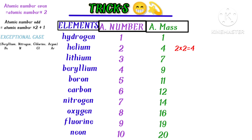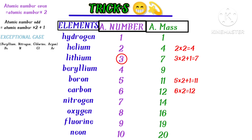Now let's find the atomic mass of lithium. The atomic number of lithium is 3, and 3 is an odd number, so we apply the second trick: atomic number × 2 + 1. So lithium: 3 × 2 = 6, and 6 + 1 = 7. The atomic mass of lithium is 7.